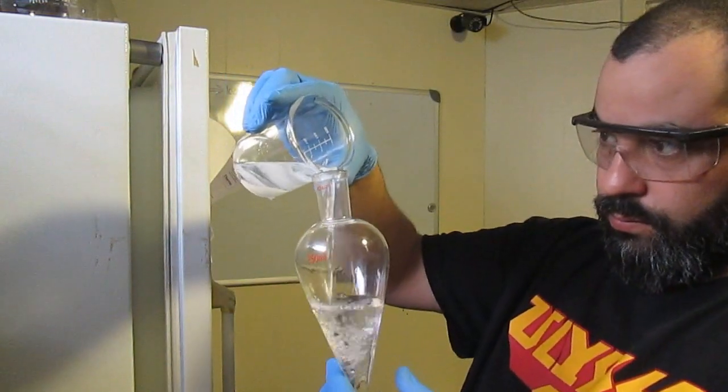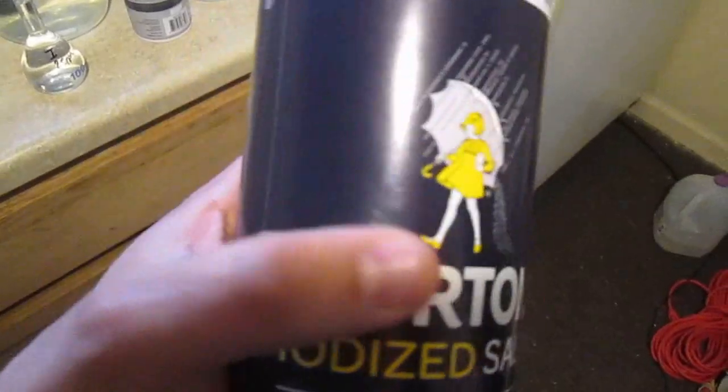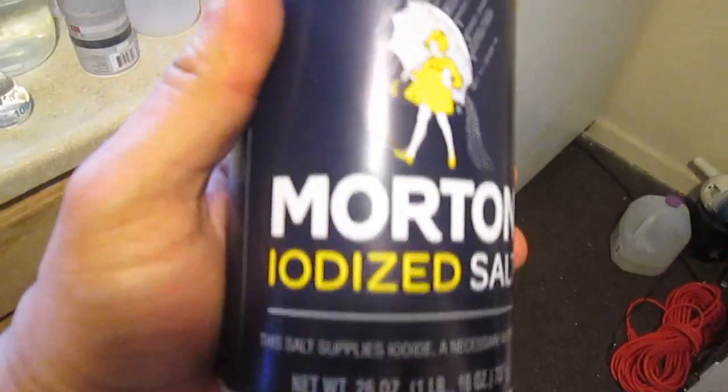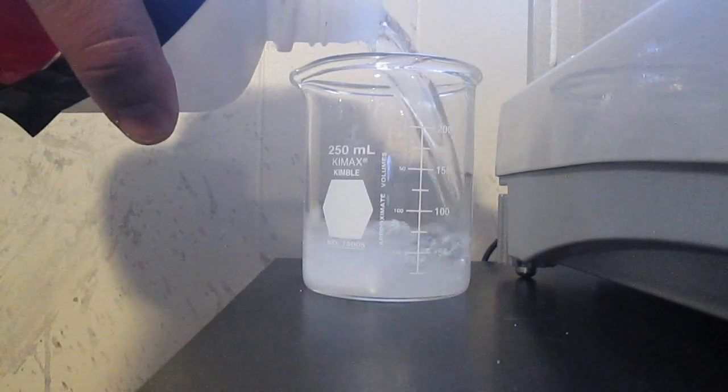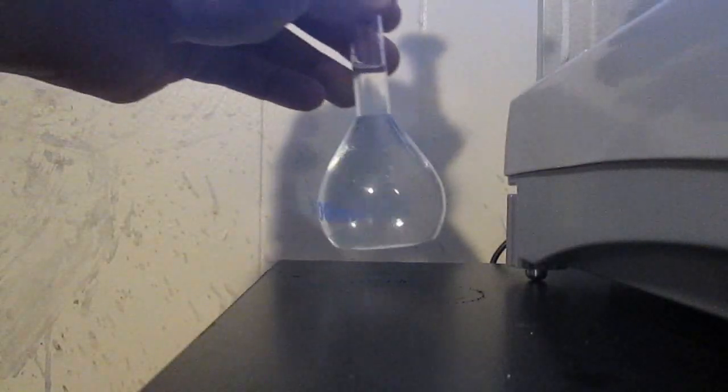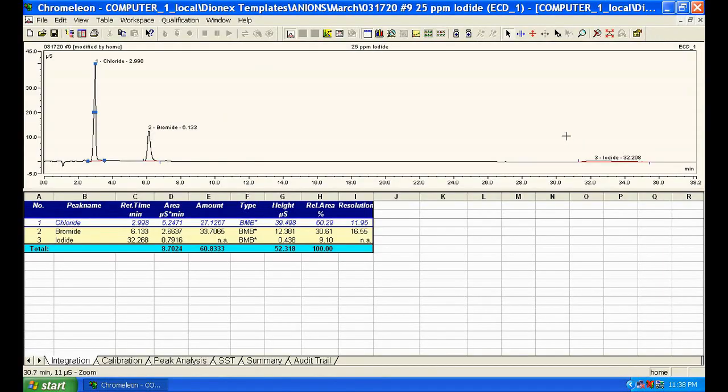Now I did not want to overwhelm the detector with chloride from iodide salt. So I extracted with acetone, evaporated, and re-dissolved it in DI water. And there it is, 10 grams of salt yields a few ppm of iodide.